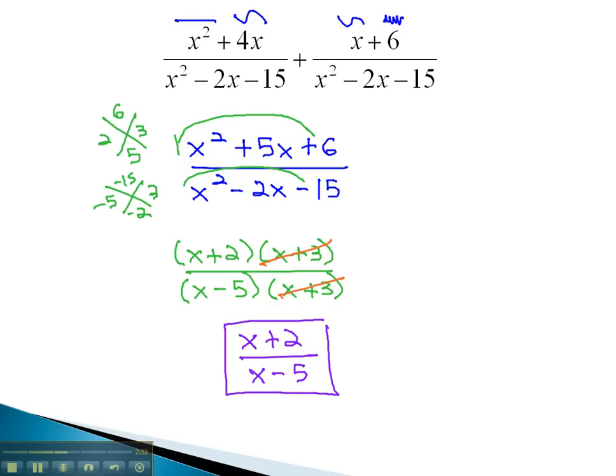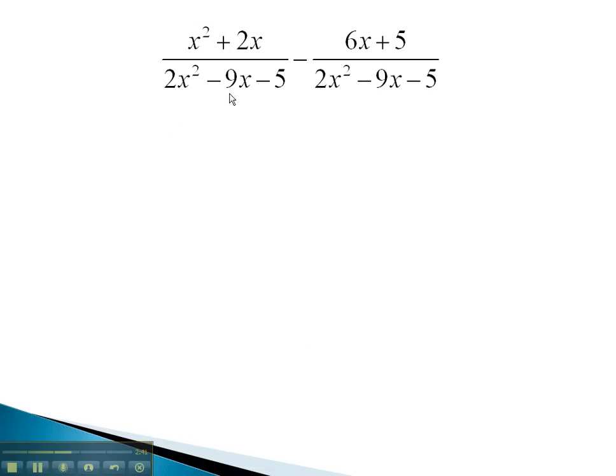Let's take a look at another example, where we combine the numerators and then reduce by first factoring. Again, in this problem, you notice we have a common denominator. However, we also have subtraction.